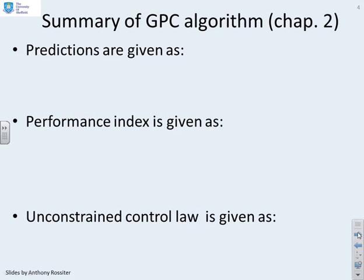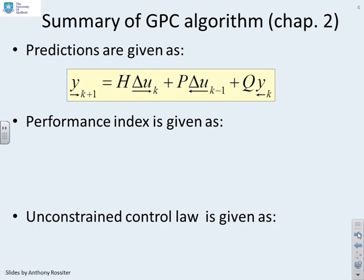Let's look at GPC and remind ourselves what we know. The predictions are given by an equation: future output predictions equal some matrix times the future input increments, plus some matrix times the past input increments, plus some matrix times the past outputs.